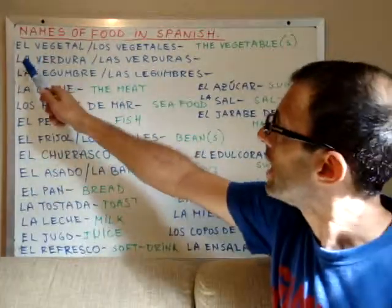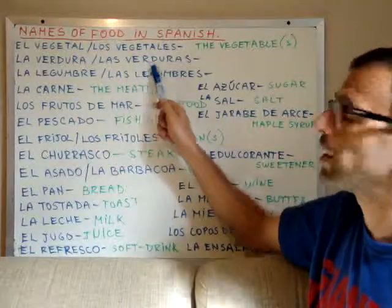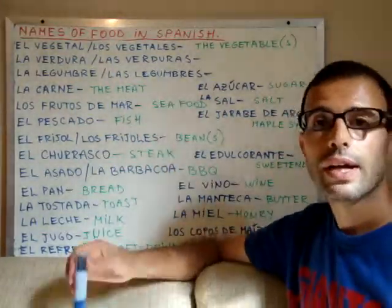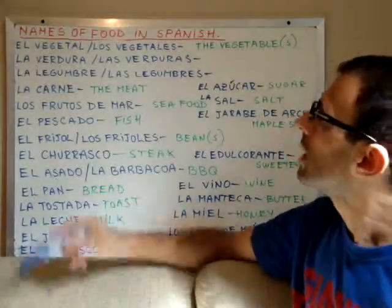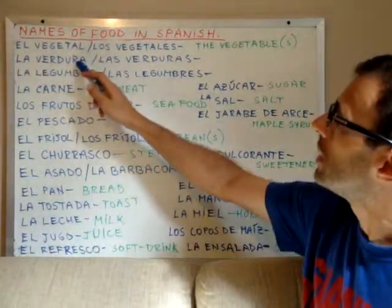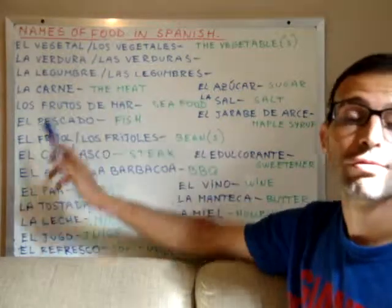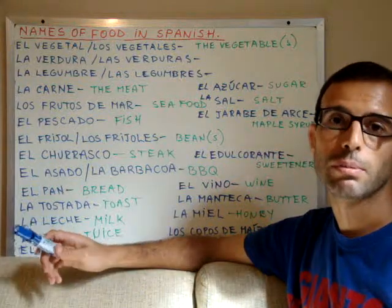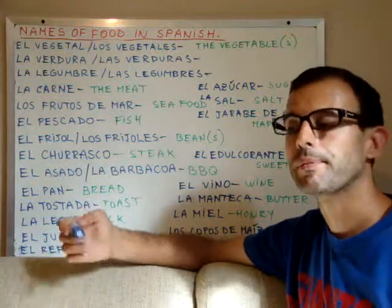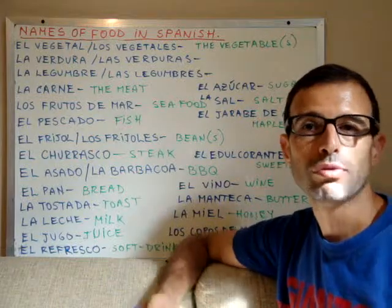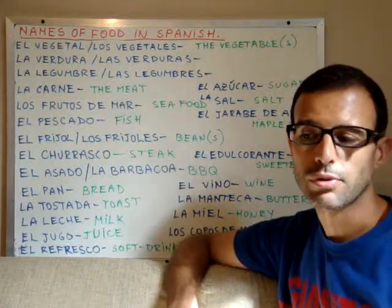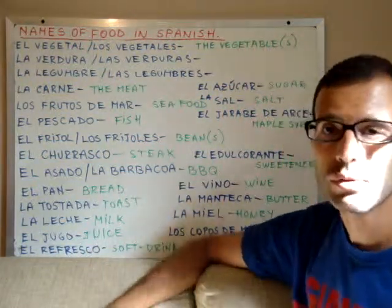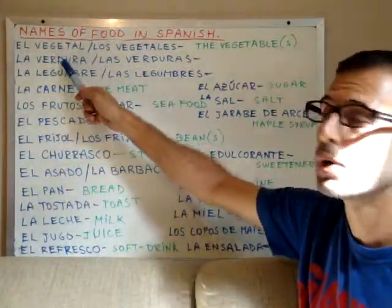Then we have la verdura, or las verduras for the plural. These are also vegetables, but not so broad in meaning because this does not include fruits. When we talk about verduras, we don't mean the sweet fruits we use for dessert — like apples, oranges, plums, peaches. That's not included when we talk about verduras.